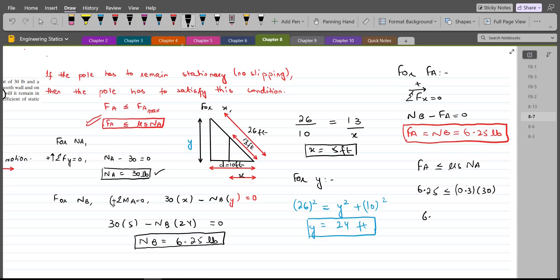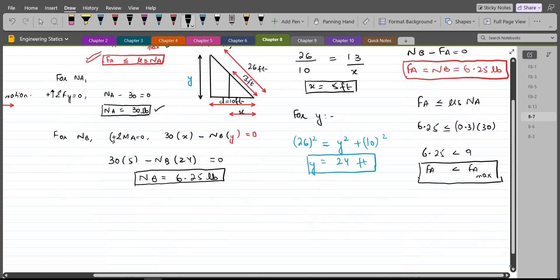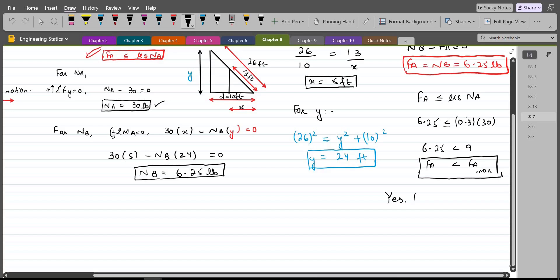So, 6.25 is less than 9 which means Fa is less than Fa max. It means the inequality proves to be true and our initial condition has been verified. So, our conclusion would be yes the pole will remain stationary because of the presence of sufficient friction.